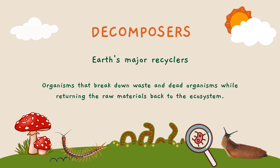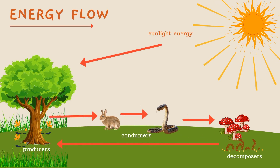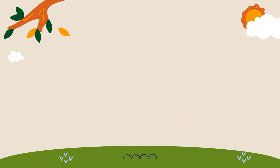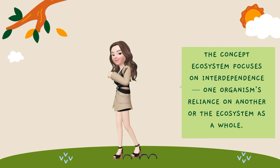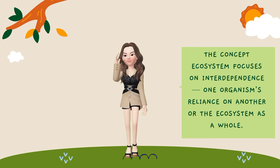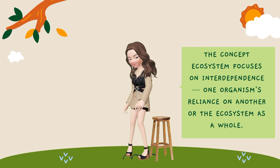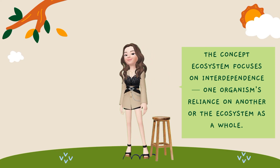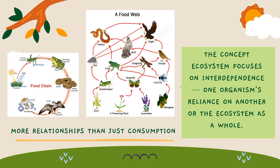Here is the energy flow among biotic factors. Before we end this lesson, I want to emphasize that the concept of ecosystem focuses on interdependence. Each organism relies on another or on the whole ecosystem. It is more about relationship than just consumption.